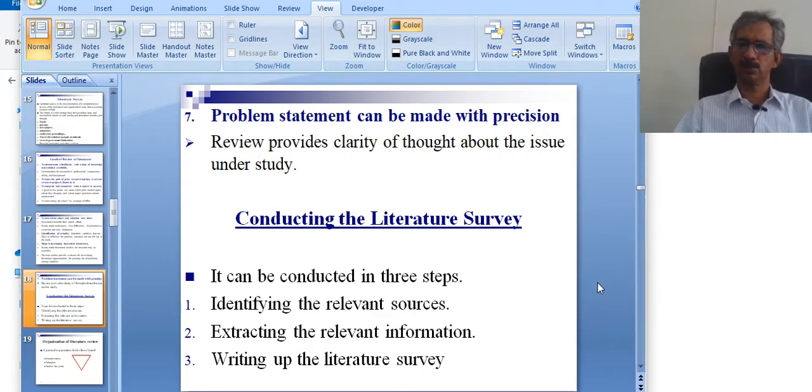Conducting the literature survey can be conducted in three steps: identifying the relevant sources, extracting the relevant information, writing up the literature survey.